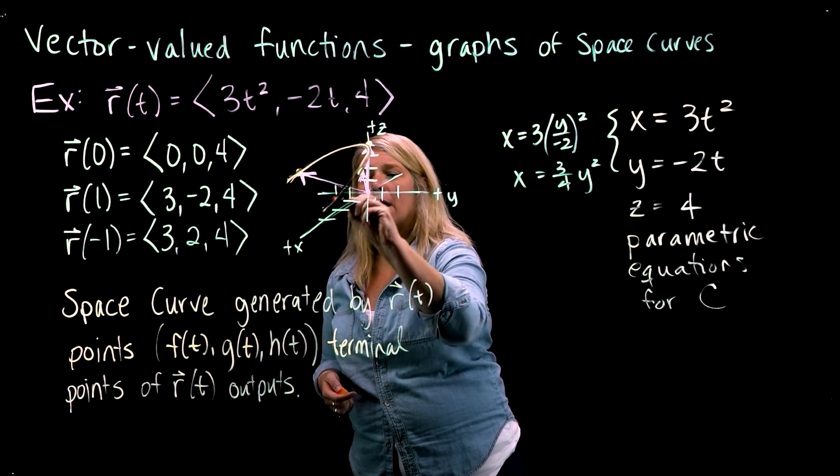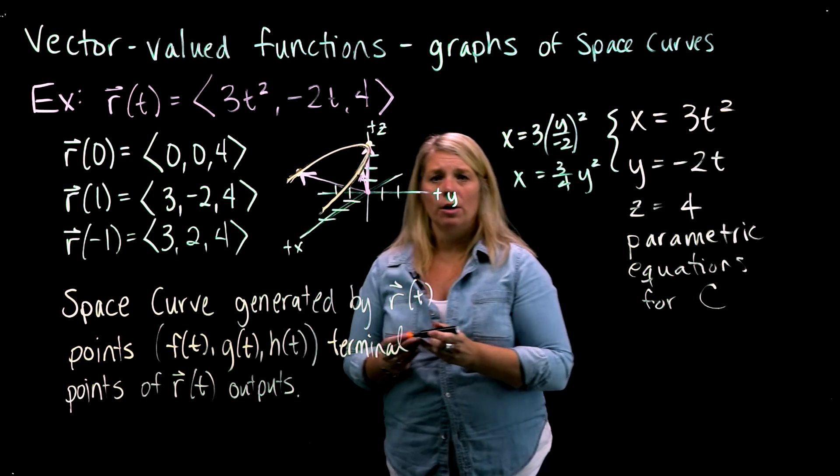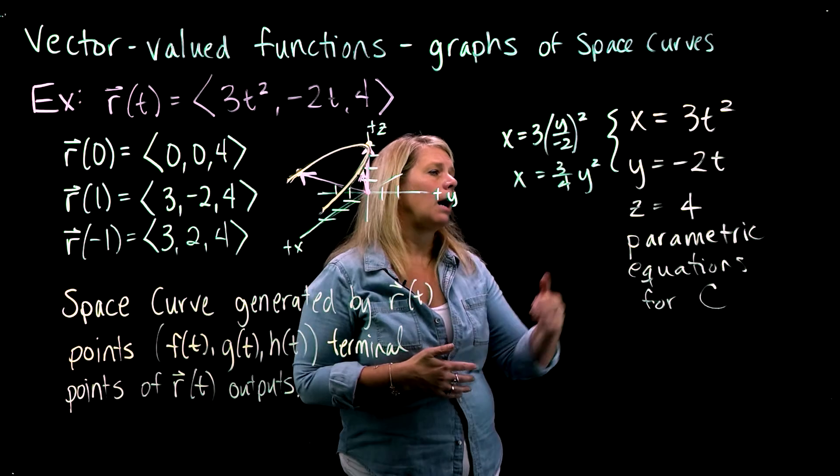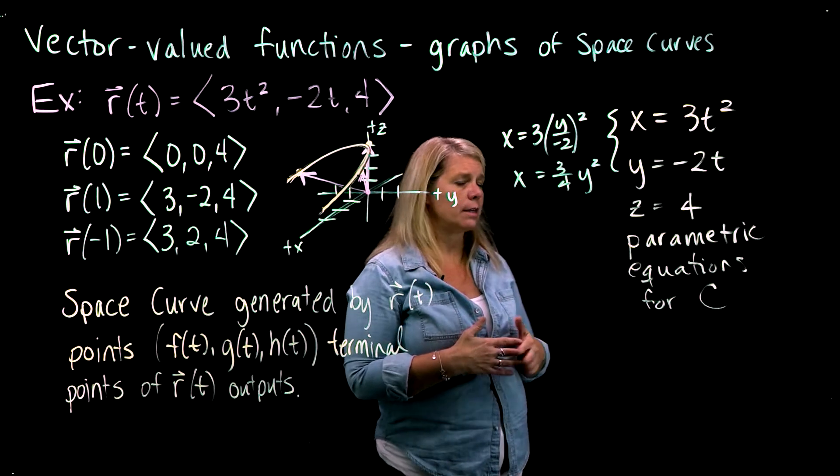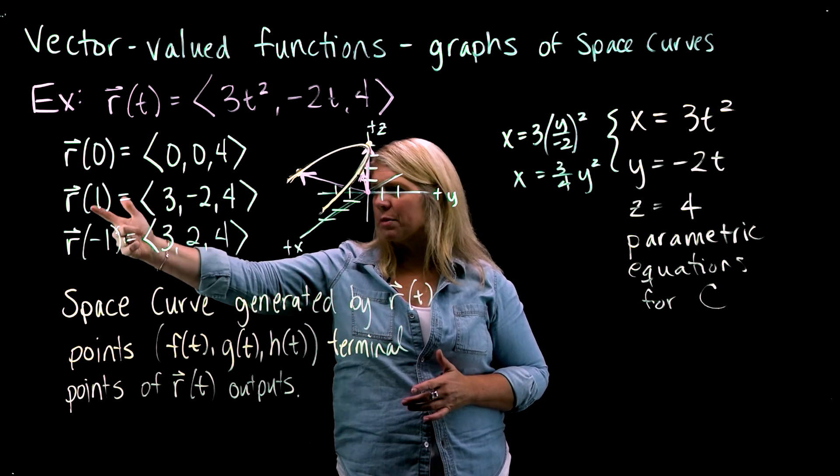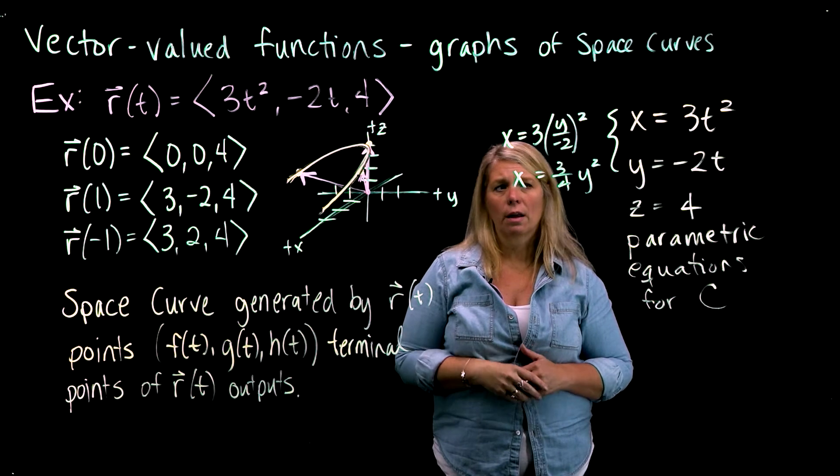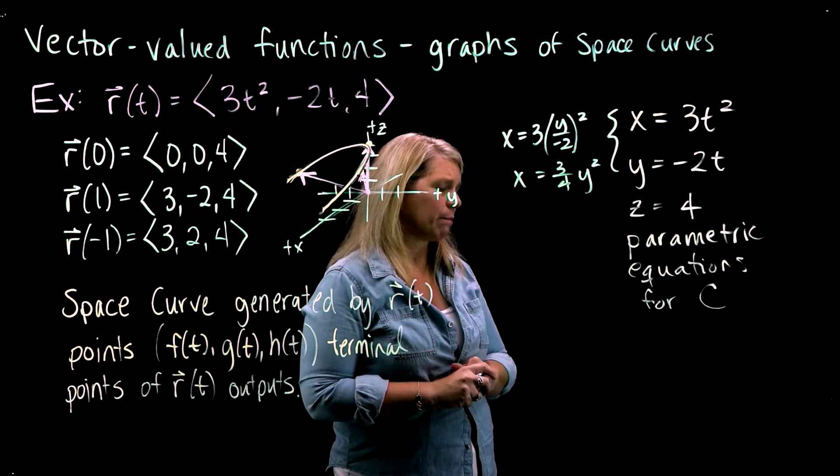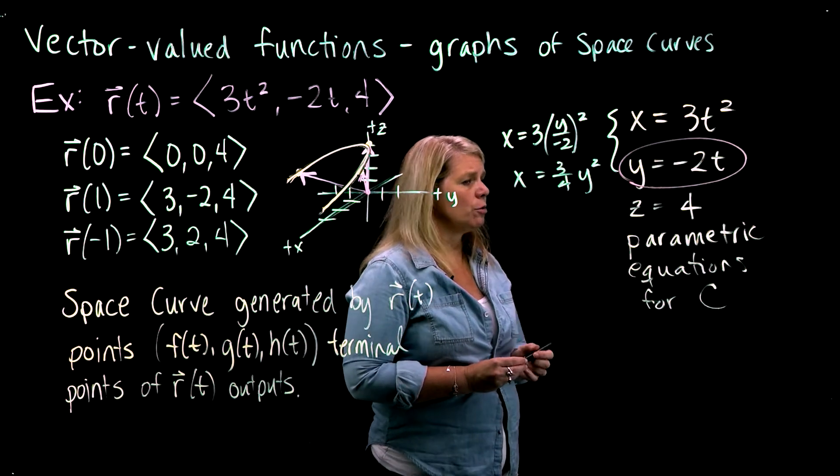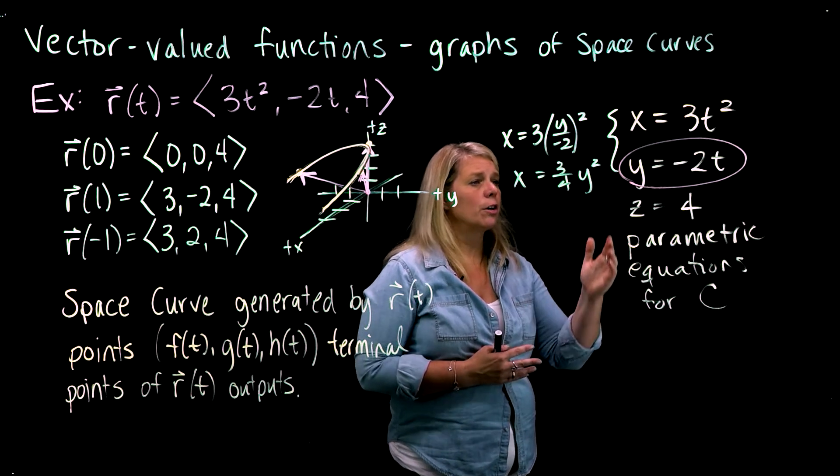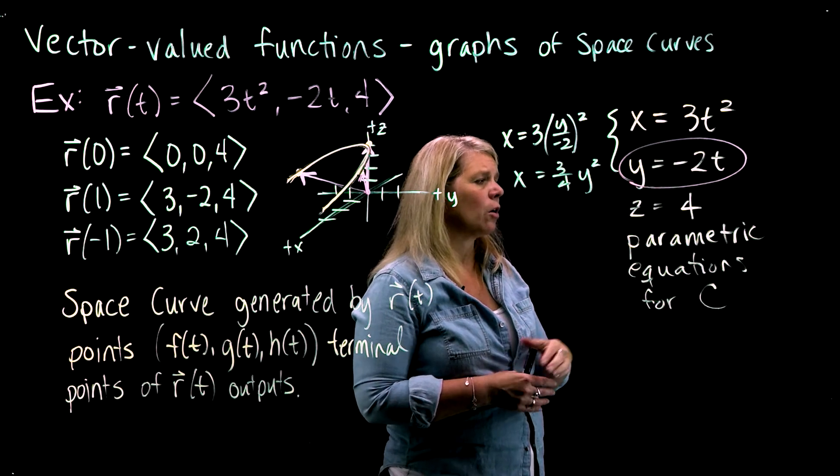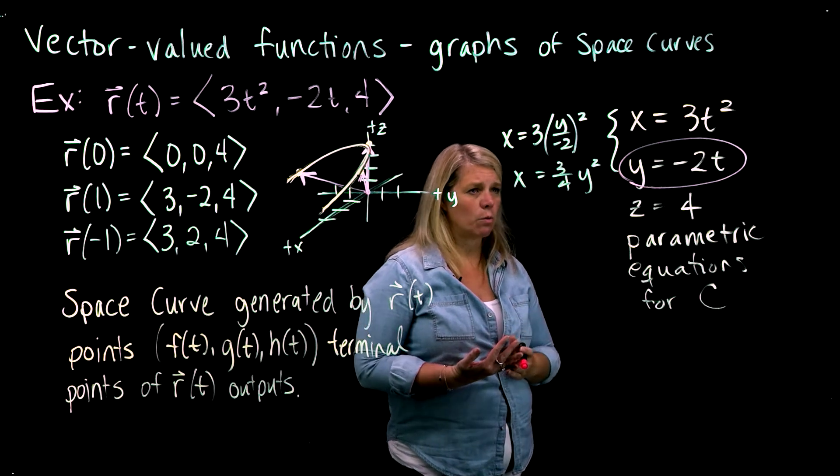Any time you graph a parametric equation, set of parametric equations, you should remember that that set of parametric equations has an orientation associated with it in the direction that t, when t increases, the direction you would move along that curve. You could use these points here and think about as t increases from 0 to 1, where does this move along that curve? You can also use these equations and think about what happens. I might choose to focus in on the second equation, y equals negative 2t. So that tells me that when t increases, y decreases because of the negative 2 here. When t gets bigger, y gets smaller. When t increases, y decreases.